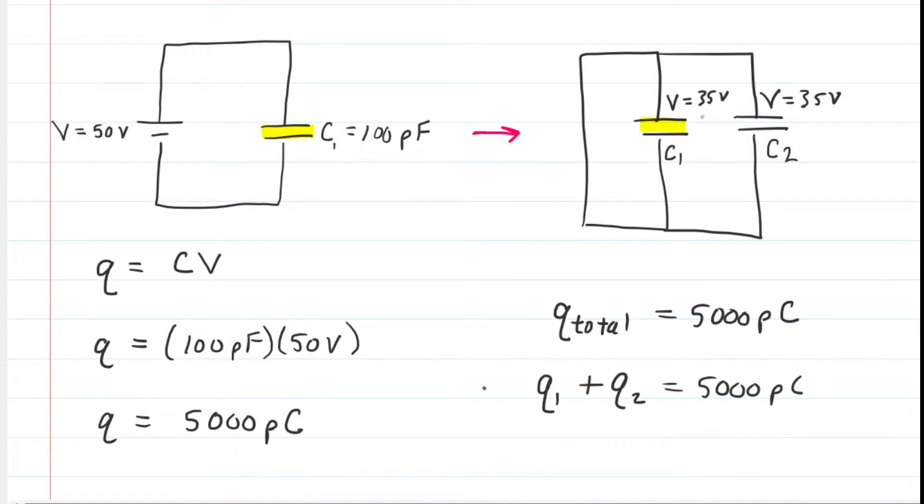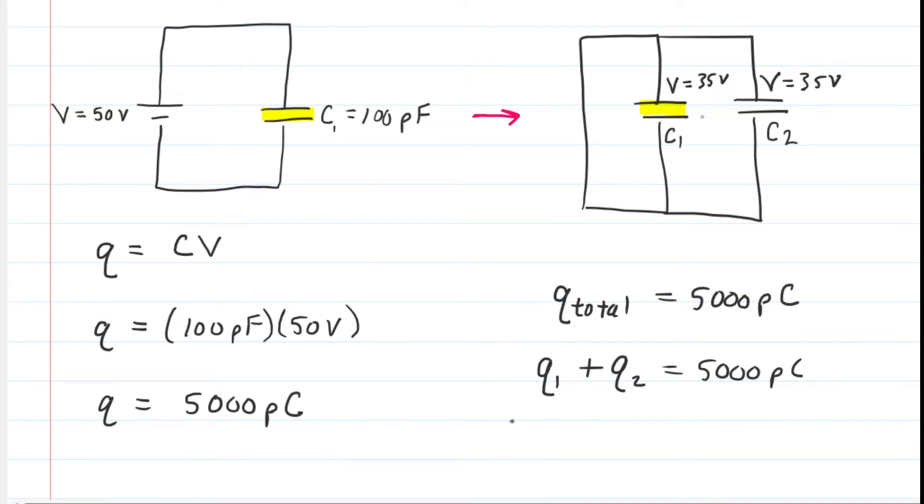Now, let us return to the equation that we've been developing down here. We know that Q1 would equal C1 times the potential difference across its plates. And then Q2 would be C2 multiplied by that same potential difference.